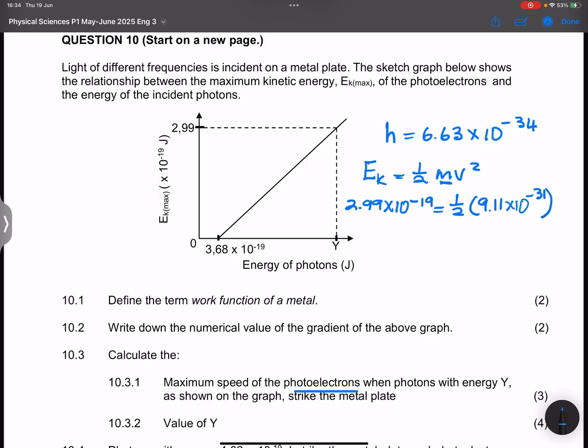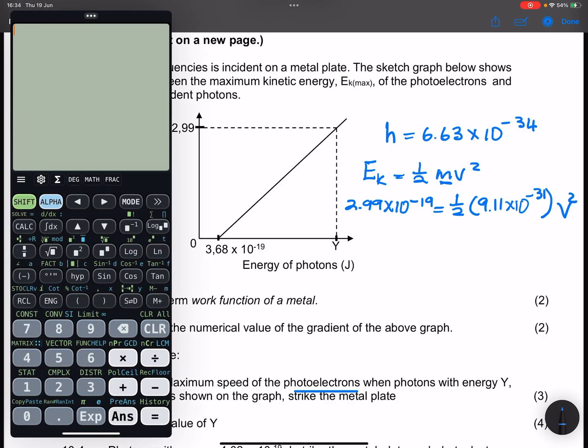And this is multiplied by V squared. Let's divide both sides there by a half of 9.11. So that's 2.99 exponent of negative 19, and this is divided by a half, so 0.5 times 9.11 exponent of minus 31. And that gives us that huge value.